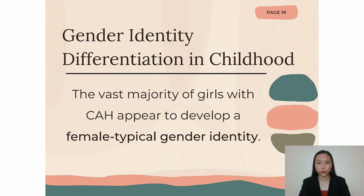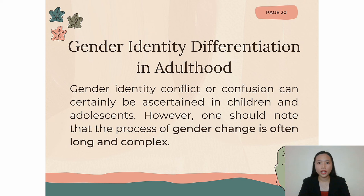What do we know about the gender identity development of girls with CAH raised under these conditions? Based on several studies conducted over the past 30-plus years, we can conclude that the vast majority of girls with CAH appear to develop a female-typical gender identity. Adult follow-up of women with CAH provides a more definitive picture regarding gender identity differentiation. Although gender identity conflict or confusion can be ascertained in children and adolescents, the process of gender change is typically long and complicated. For example, in women without known somatic intersexuality who undergo gender reassignment such as female-to-male transsexuals, the mean age at transition is usually in the mid-twenties.